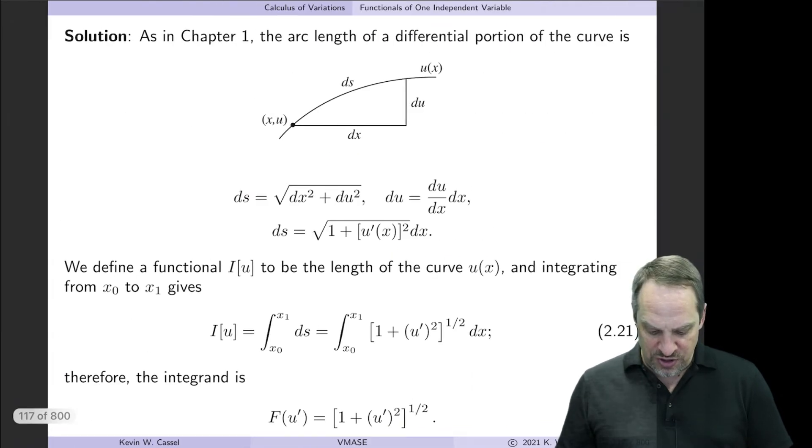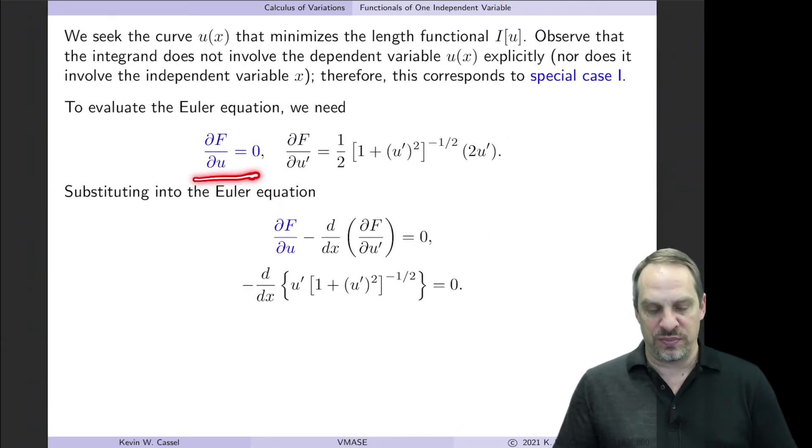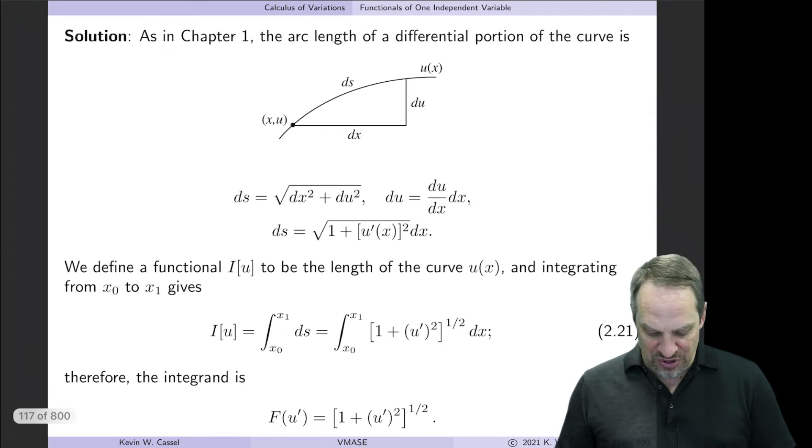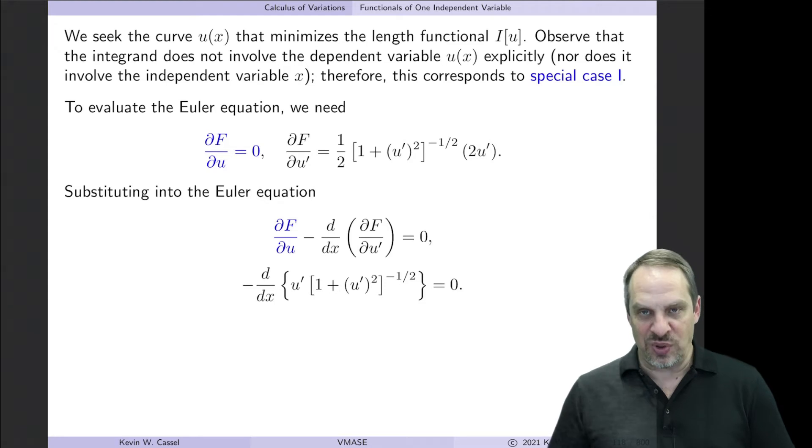Because there are no u's that appear explicitly in our integrand, ∂F/∂u is just zero. ∂F/∂u', well, I have the square root of 1 plus u prime squared. So the partial derivative of that with respect to u prime, that's just 1/2 times the argument in the square root to the minus 1/2, and then times the derivative of the argument, which is, in this case, 2u'. That's just using the usual chain rule to evaluate that partial derivative.